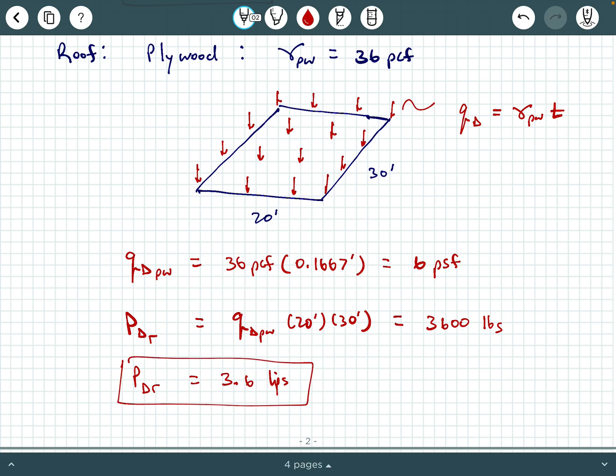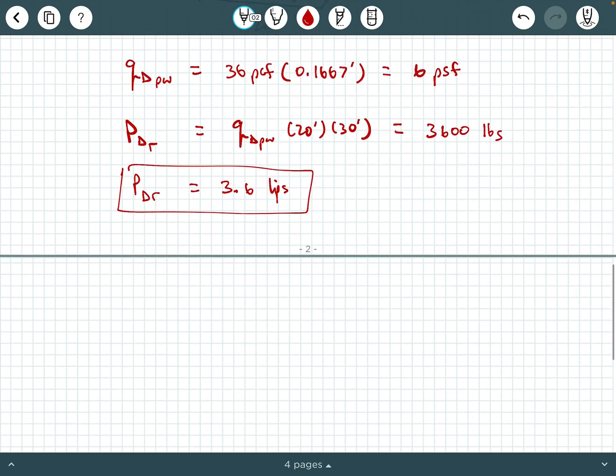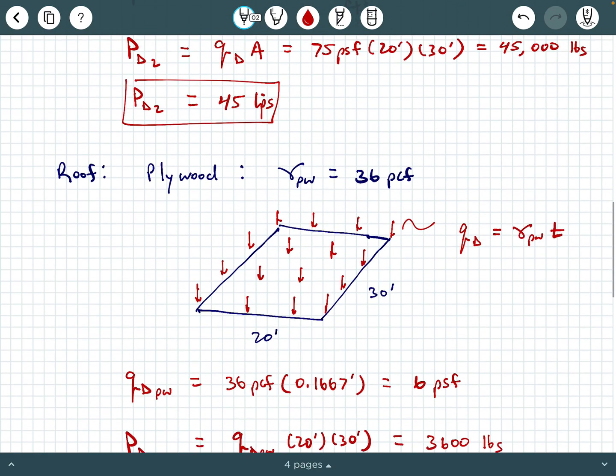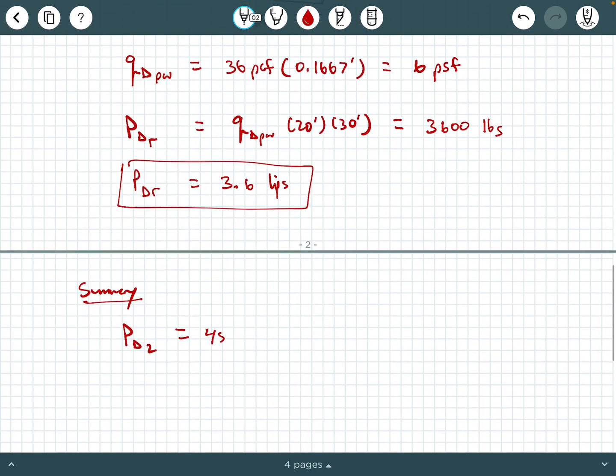And that is our answer. And so to summarize, P dead for the second floor was 45 kips. And then P dead for the roof was 3.6 kips. So that concludes this video.